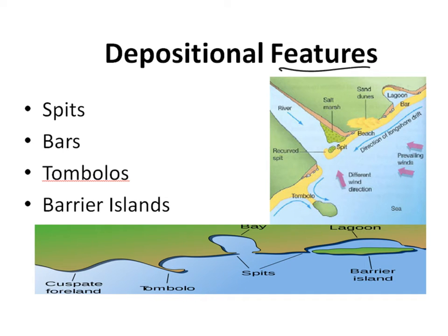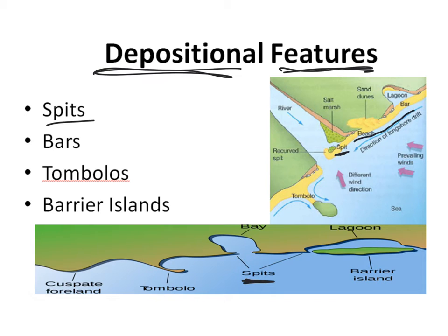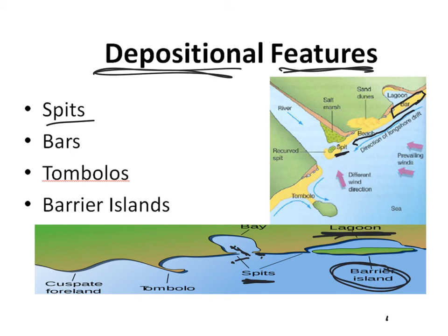We can also have shoreline features caused by deposition — the laying down of sediment. The first we'll talk about is a spit. If we have a longshore current coming down, it's going to deposit material, and when it gets to the edge of a bay or a river, it's going to deposit it there, building up spits. If enough spit material goes across, we form what we call a sandbar, and the sandbar will actually close off the bay and cause it to form a lagoon. If it's not fully attached, then we have what we call a barrier island.